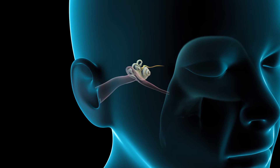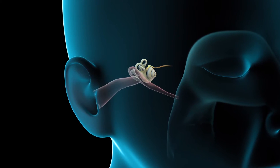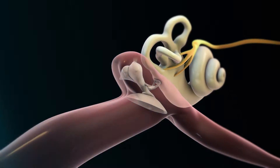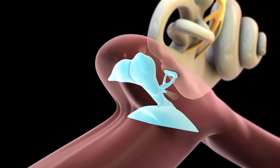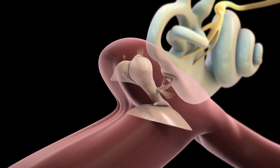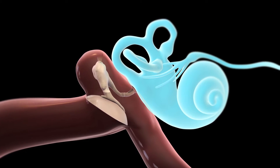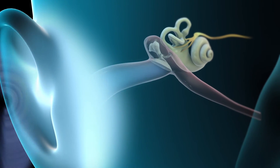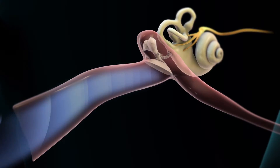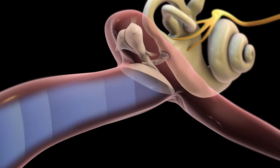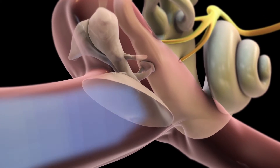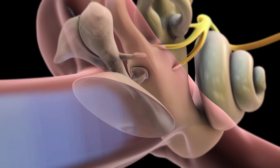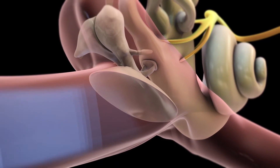The ear consists of three main parts: the outer ear, the middle ear, and the inner ear. The outer ear includes the pinna, which collects sound waves, and the ear canal, which transports sound waves to the eardrum — a paper-thin layer of tissue separating the outer and middle ear.